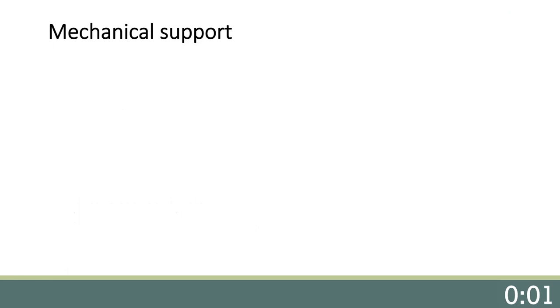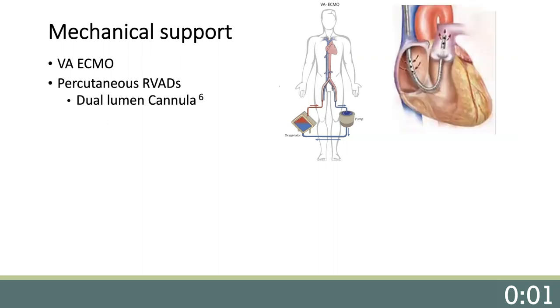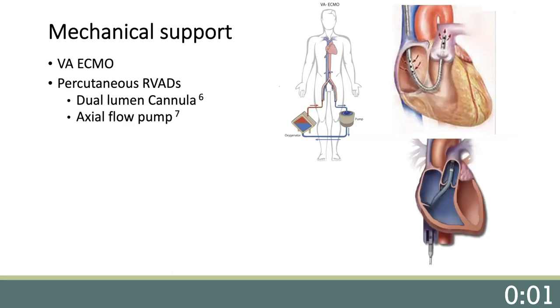When medical management is insufficient, there are mechanical circulatory support options. For severe shock, ECMO can resuscitate the RV and organs — it offloads the RV, reduces RV wall stress, and provides excellent oxygen delivery for resuscitation. In isolated RV failure, or if the patient has an LVAD in place, a percutaneous RVAD can provide up to 4 and sometimes 5 liters of cardiac output. Emerging data shows promise for the dual-lumen cannula RVAD, or PROTEC-DUO, and for the percutaneous right-sided axial flow pump, or Impella RP.